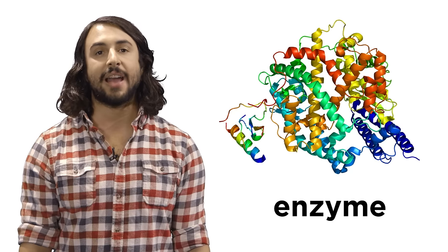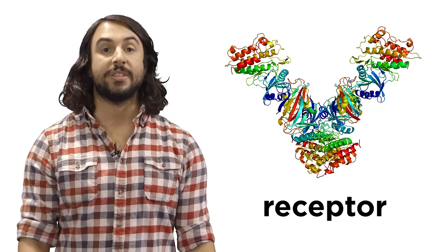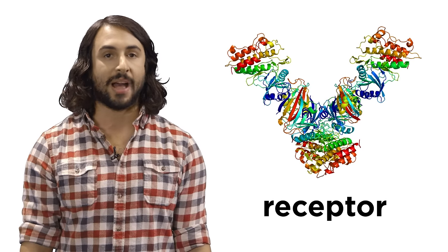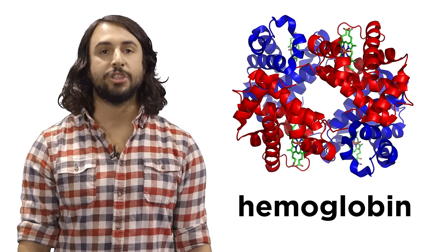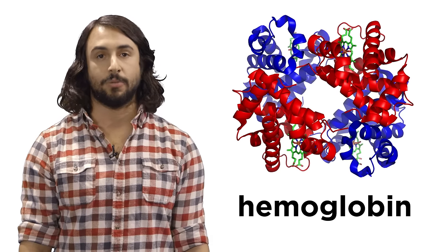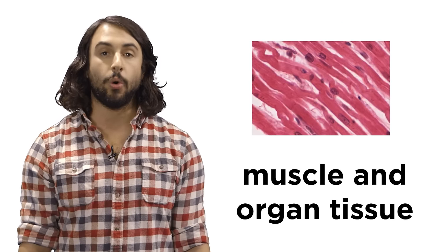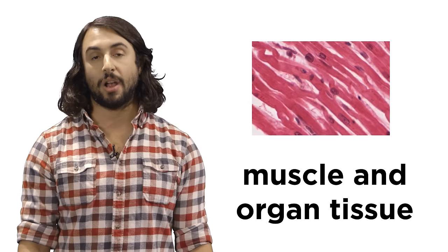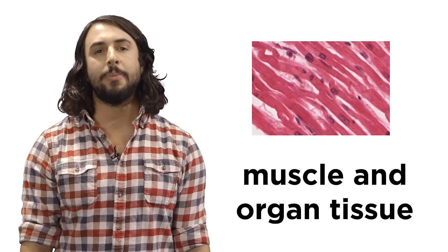Different kinds of proteins include enzymes that catalyze chemical reactions, receptors that control signaling in your body, hemoglobin which carries oxygen throughout the bloodstream, muscle and organ tissue which give your body structure and mobility, and so many other things.